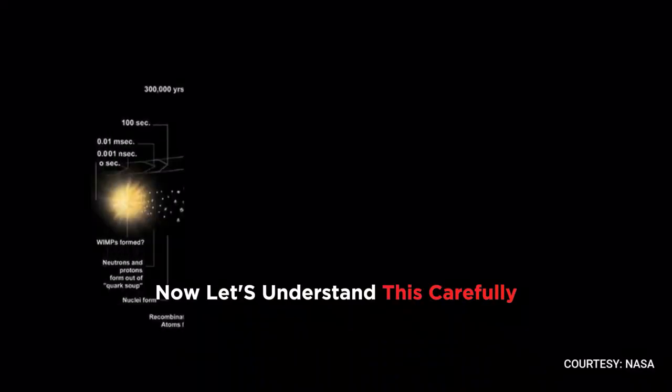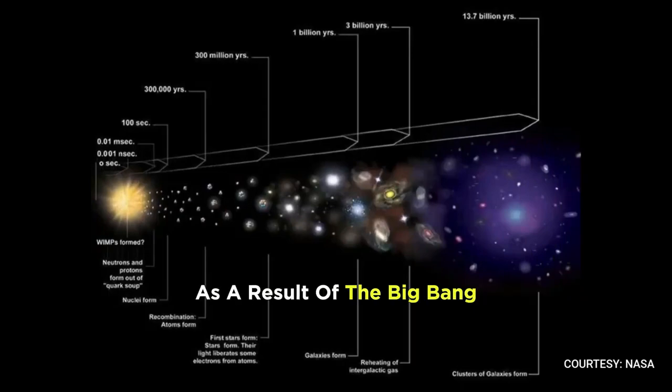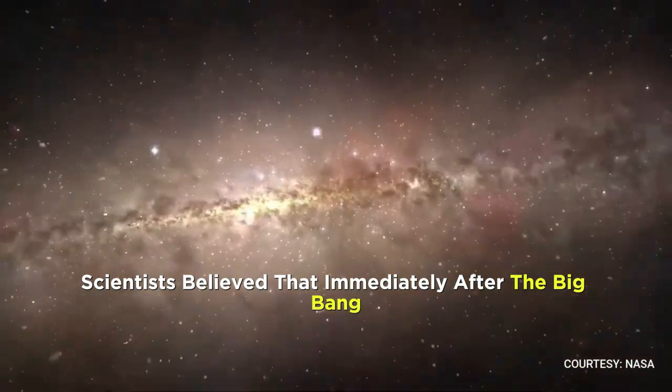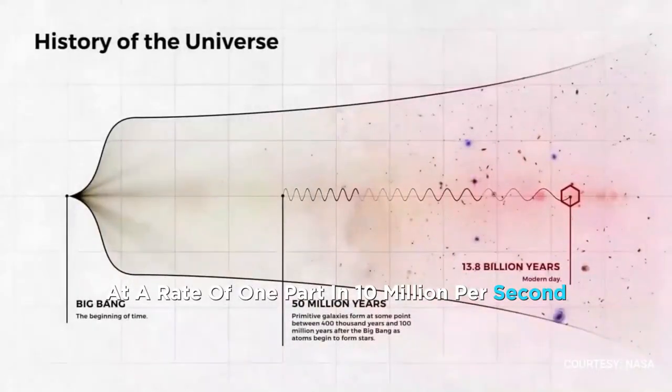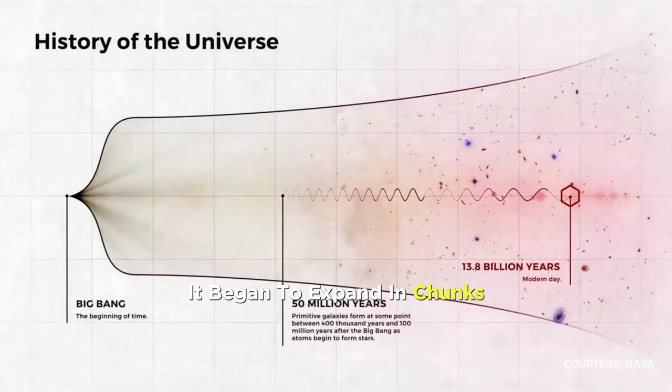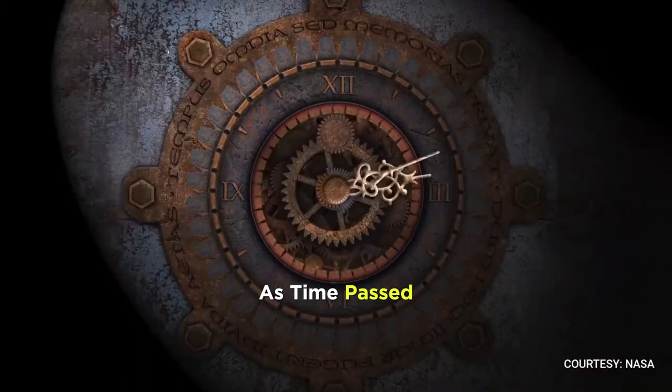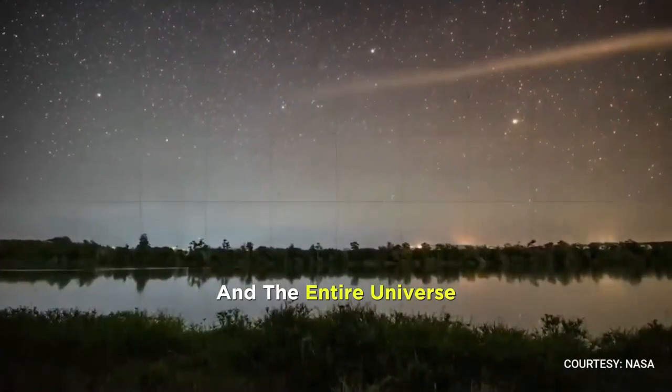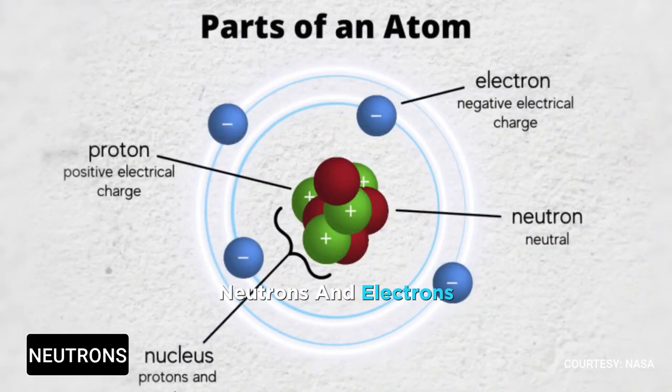Now, let's understand this carefully. We all know that our universe came into existence as a result of the Big Bang, which occurred approximately 13.7 billion years ago. Scientists believed that immediately after the Big Bang, the universe started expanding at a rate of 1 part in 10 million per second. It began to expand in chunks, doubling its original volume 90 times. As time passed, 380,000 years went by, and the entire universe became filled with atomic particles such as protons, neutrons, and electrons.